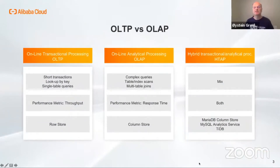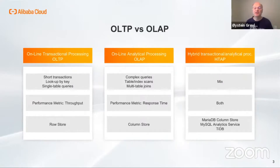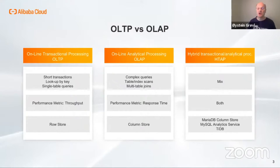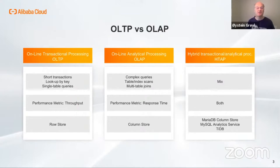MySQL's sweet spot has traditionally been online transaction processing, and it became popular because it could support a very high transaction throughput for web applications. But if you want to do serious analytical processing, you will often export the data from your OLTP system to another data store specialized for this purpose. Many of those systems today, like Snowflake, are based on column store technology. However, there are quite a few users who want to avoid dealing with another system and rather run a few analytical queries on the OLTP system — and this presentation is for those users.